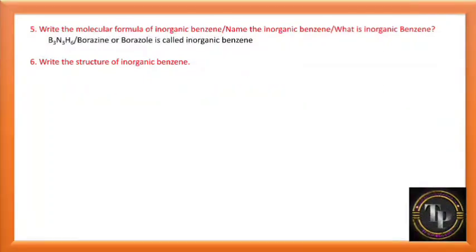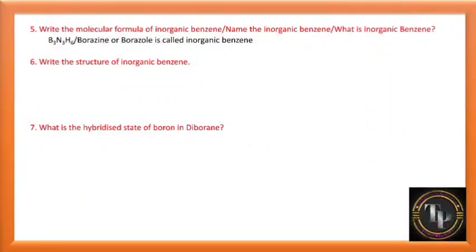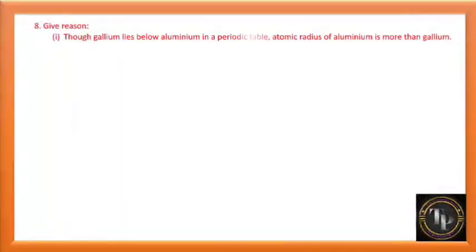What is the hybridization of boron in diborane? Diborane formula is B2H6, and the hybridization of boron is sp3.